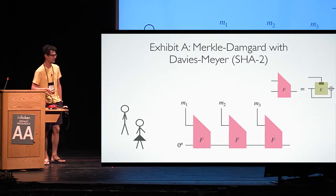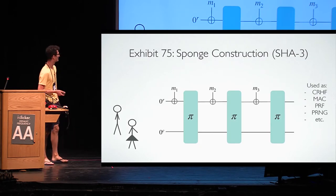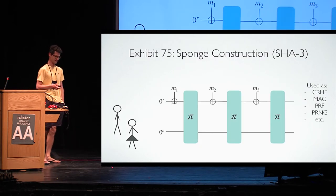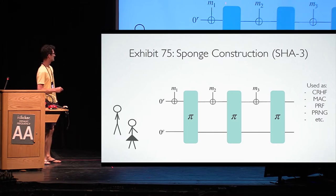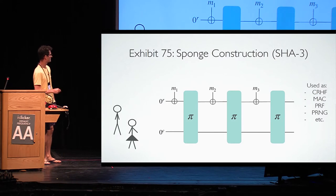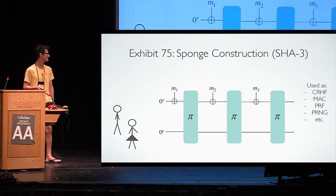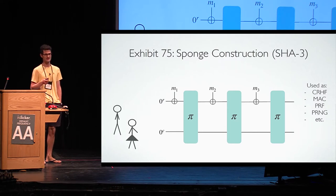They stare at it for a moment, then go on to the next item in the exhibit: the sponge construction. A message block is XORed into the top part, a permutation is applied to the entire input, and the next message block is again XORed to the top part, and so on. They can read on a caption that this is widely used—for collision resistance, to build MACs and PRFs, and for random number generation.